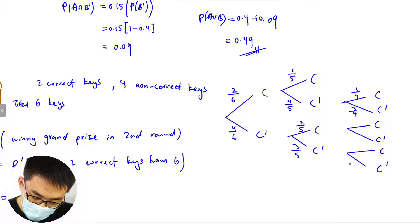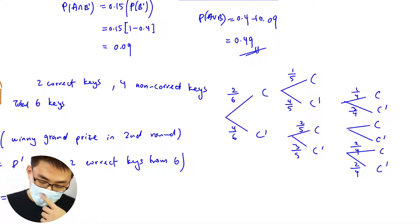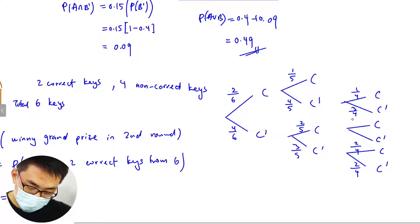Then this will be 2 over 4, this will be 2 over 4. 2, 1 over 4, 2, 1 over 4 and 3 over 4. Okay great, this is a tree diagram.